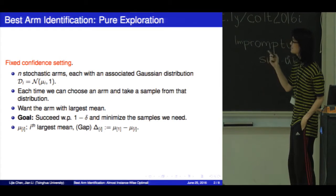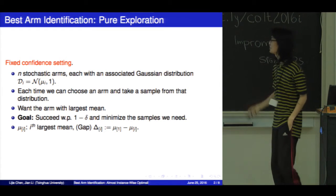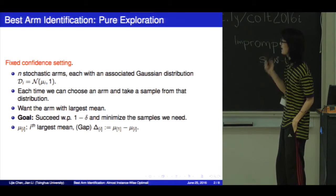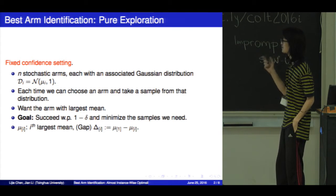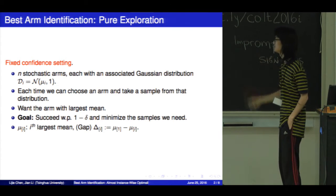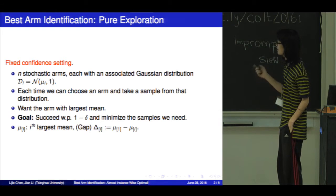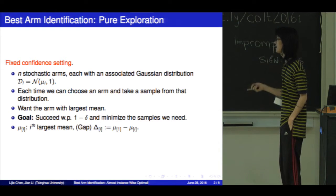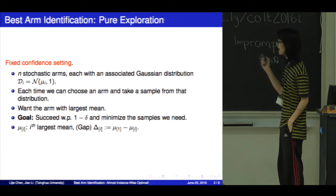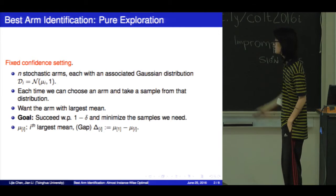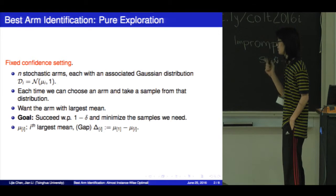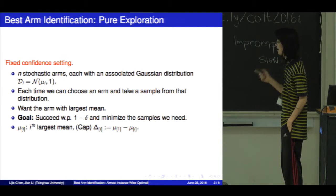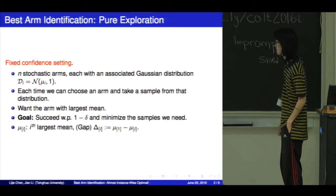This is a famous setting we all know about here. There are n stochastic arms, each with an associated Gaussian distribution. Each time we can choose an arm and take a sample from that, and we want the arm with the largest mean. The goal is to succeed with probability 1 minus delta, and minimize the samples we need.